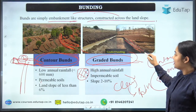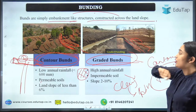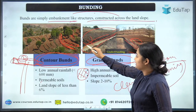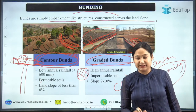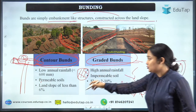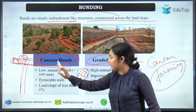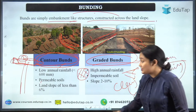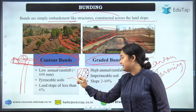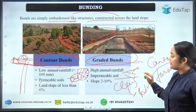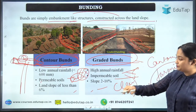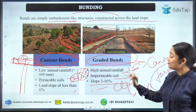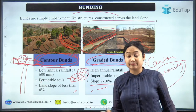The graded bund includes a drainage channel alongside the bund structure. If water becomes excessive, it drains through this channel. Contour bunding is used in low-rainfall areas to conserve moisture. In high-rainfall areas or with permeable soil, the graded bund is preferred. The slope range for contour bunding is up to six percent; for graded bunding, it is two to ten percent.